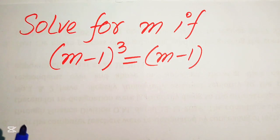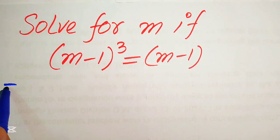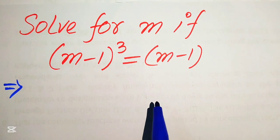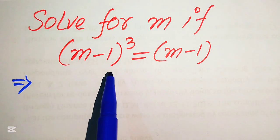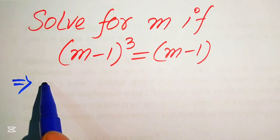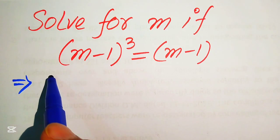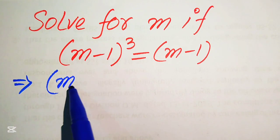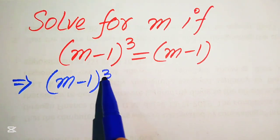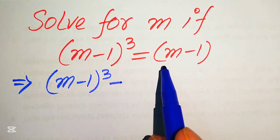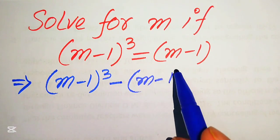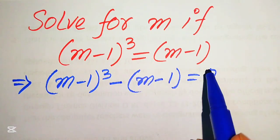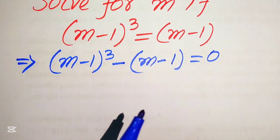The very first step is to focus on the right hand side where we have m minus 1. We move this m minus 1 to the left hand side, so it becomes (m - 1)³ minus (m - 1) equals 0.